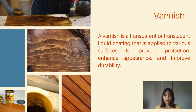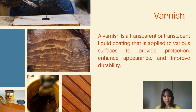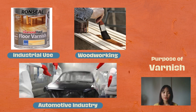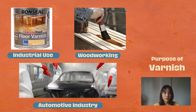The primary purposes of varnishing include protection, enhancement, preservation, sealant, and aesthetic appeal. Varnishes are widely used across many industries and applications. In industrial use, varnishes protect and seal various surfaces including wooden furniture, floors, ships, and industrial equipment. In woodworking, varnishes are commonly applied to wooden furniture, floors, and cabinetry to protect them from wear and enhance their appearance. In the automotive industry, clear coat varnishes are used as a final protective layer over car paint, providing shine and protection against the elements.